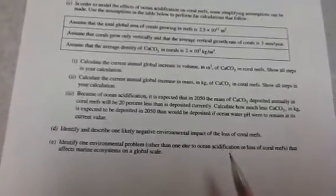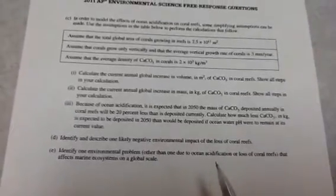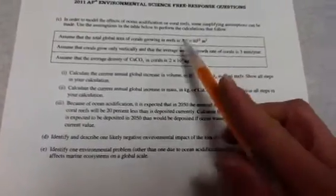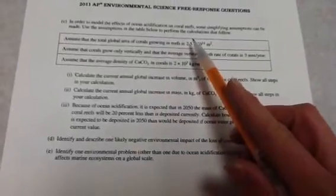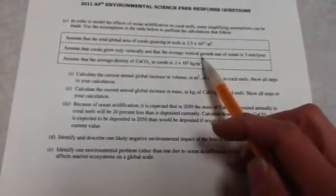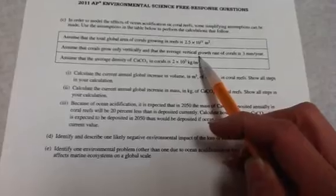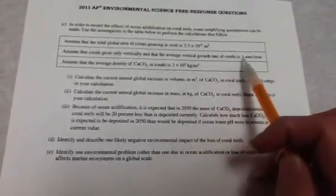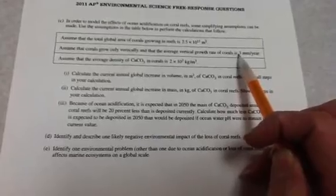Part one: Calculate the current annual global increase in volume in meters cubed of calcium carbonate in reefs. Show all steps in your calculation. Here's my area and here's my height. To find the increase in volume, I multiply length times width times height to get meters cubed.